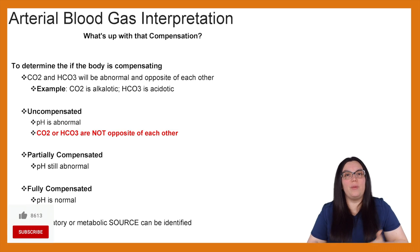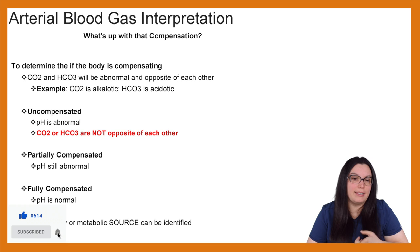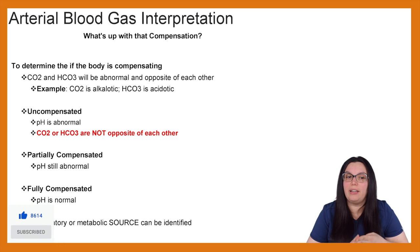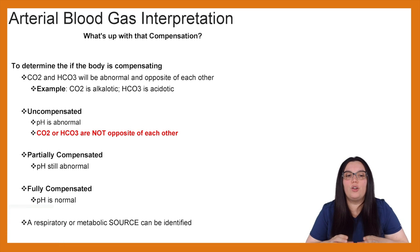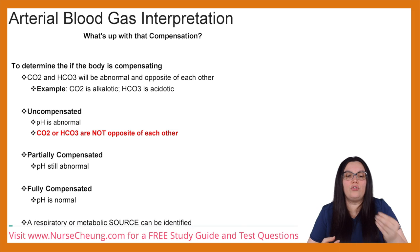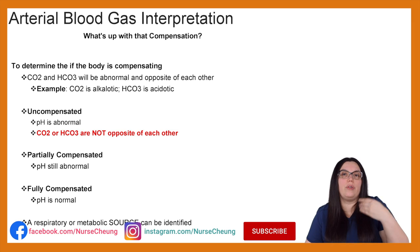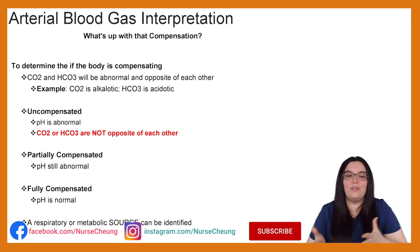So how do we determine if our body is compensating? We determine this by our CO2, which is our carbon dioxide, and our HCO3, which is our bicarbonate — they're going to be abnormal and usually opposite of each other. So our CO2 is going to be alkalotic and our HCO3 is going to be acidotic, and vice versa.